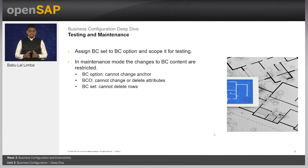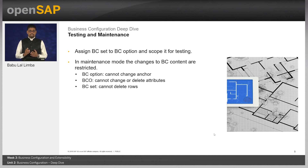It is also important to understand the maintenance aspects of business configuration content. Once the add-on is in maintenance mode, there are restrictions to changing the business configuration content. In a business configuration option, you cannot change the mandatory flag, availability for scoping, or the anchor. Once the BCO is delivered, you cannot change or delete the fields defined in the BCO; however, adding new fields is allowed. In a BC set, you cannot delete the rows of data that you provided, but you can add more in maintenance mode.